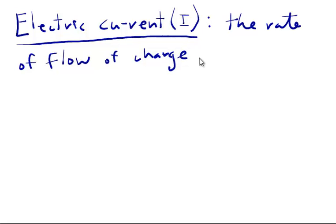And we can define it as the rate of flow of charge. And remember the symbol for charge is Q. And it's usually electrons.